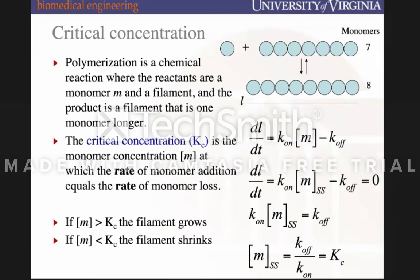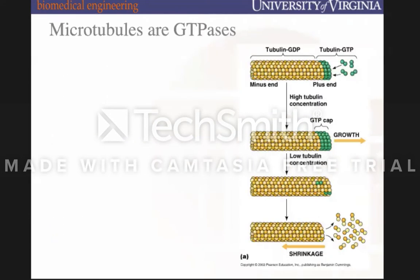This notion of the critical concentration is important to keep in mind throughout this lecture. It's typically something found out experimentally, but it's an important concept to help you consider what controls polymerization as it relates to monomer concentration.